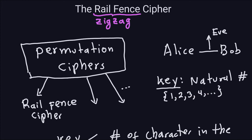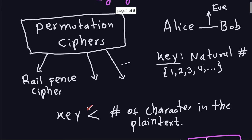One important part of the rail fence cipher is that when you choose your key, you have to make sure that the key — whatever the number is — is extremely less than the number of characters in the plaintext. That's very important, and the reason for that will come later. If the key is bigger than the number of characters in the plaintext, the rail fence cipher is not really good — it's not really a cipher at all actually.